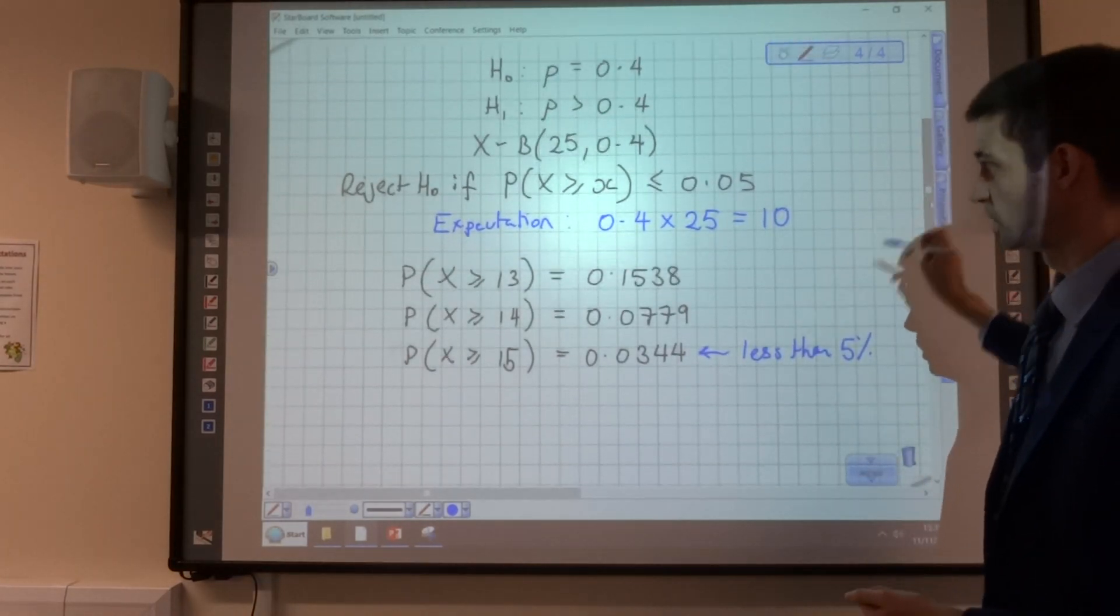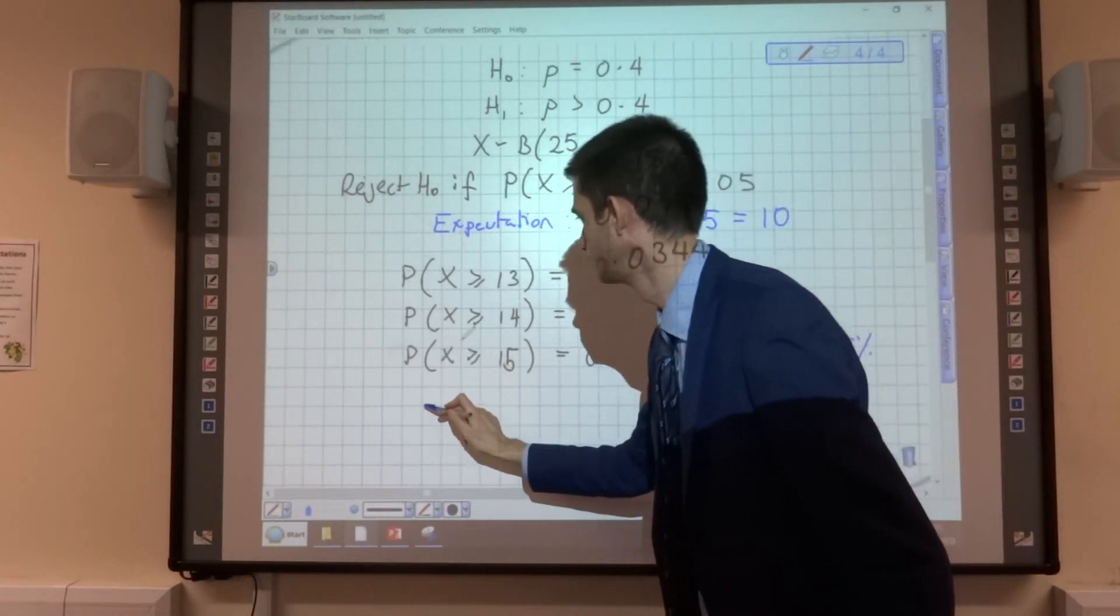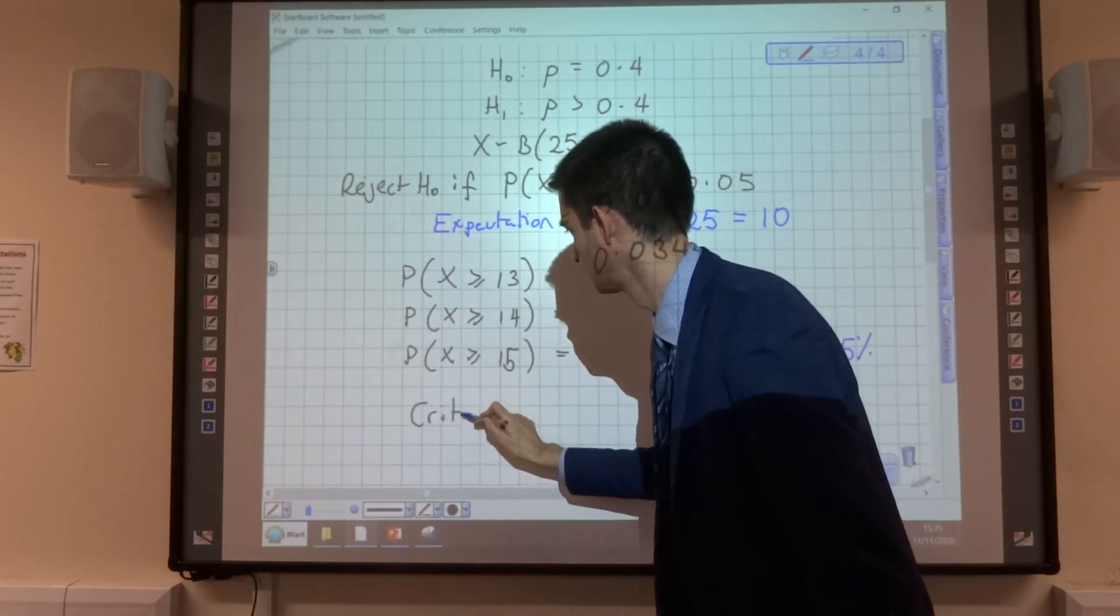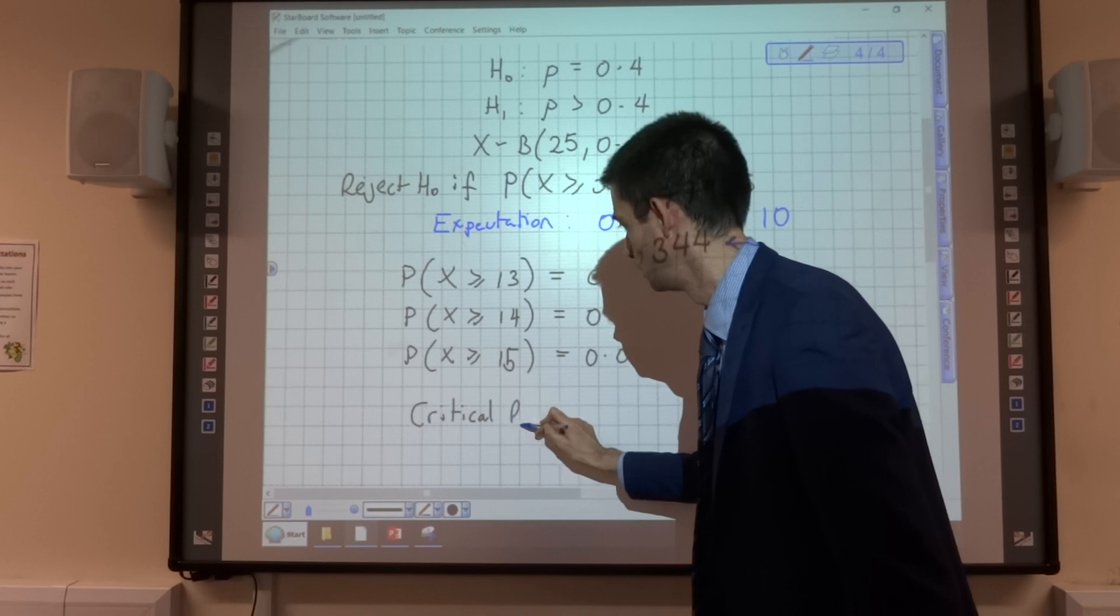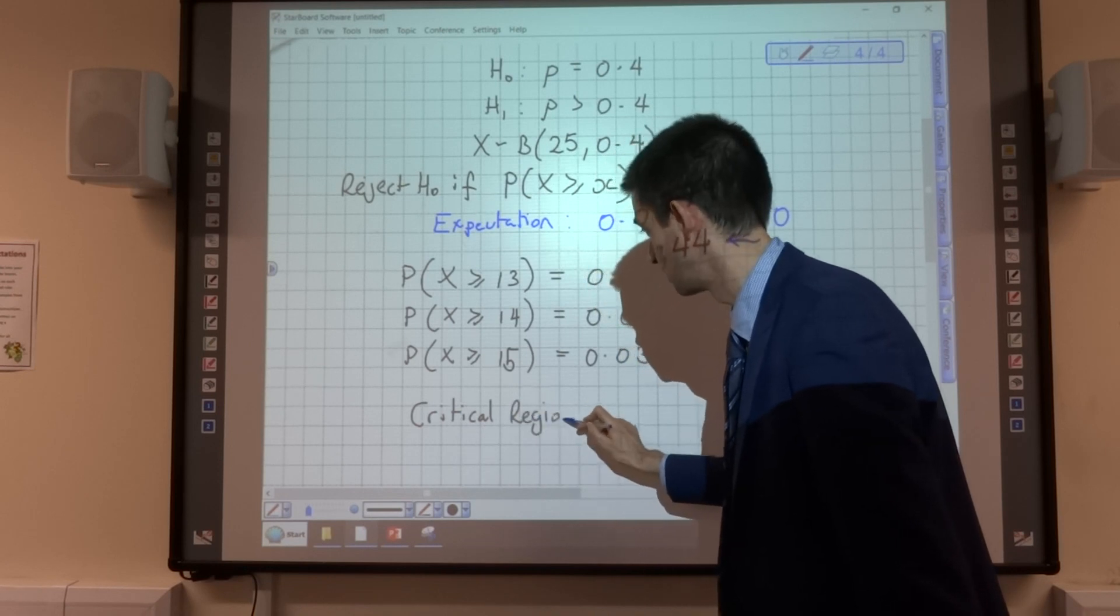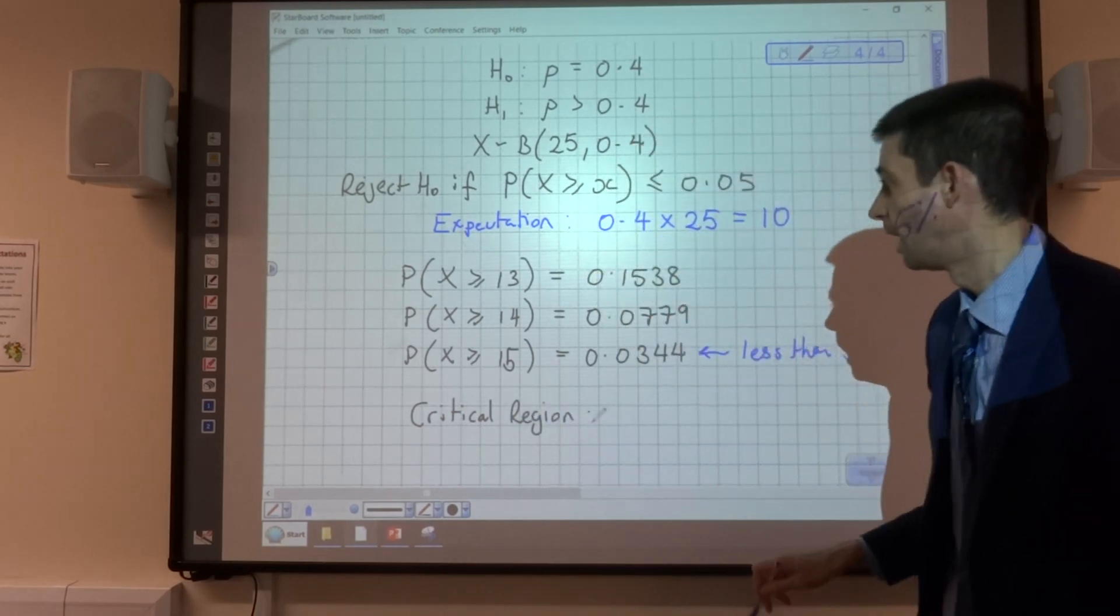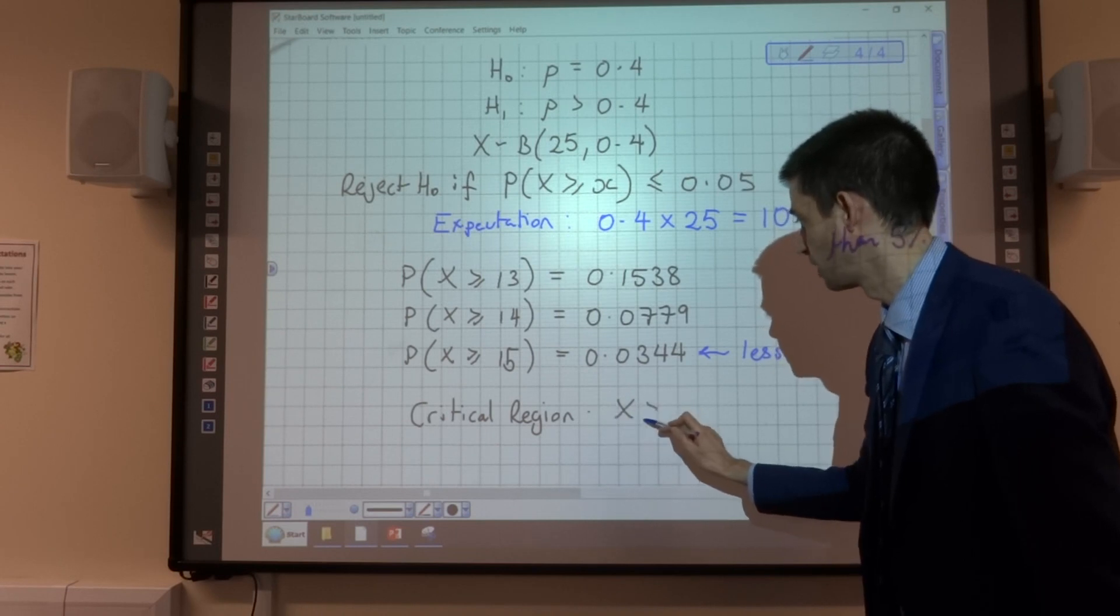So my critical region for suggesting that the probability is greater than 0.4 is going to be X is greater than or equal to 15.